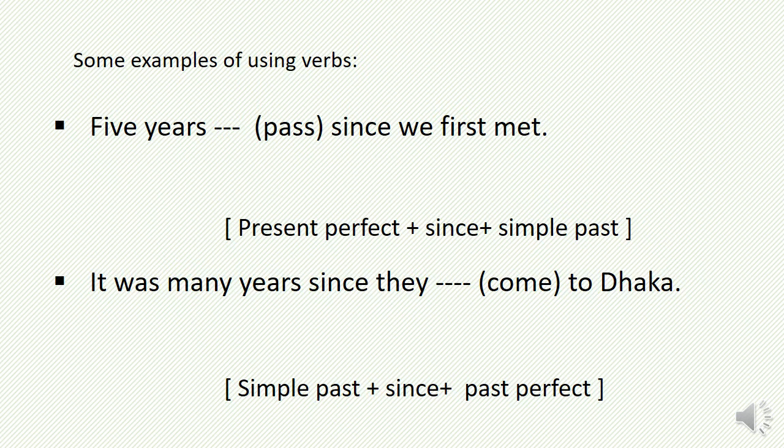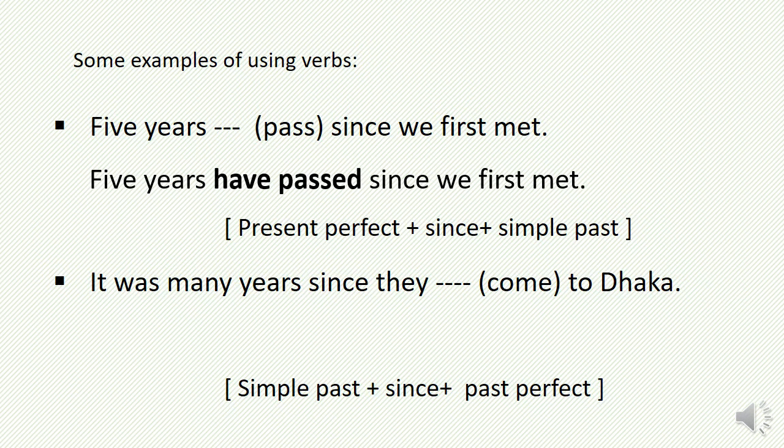There are some more examples. 'Five years ___ past since we first met.' Look at this sentence — there is the term 'since.' If 'since' is used as a conjunction to join two clauses, then the clause before 'since' will be in present perfect and the clause after 'since' will be in simple past. So the correct sentence will be: 'Five years have passed since we first met.'